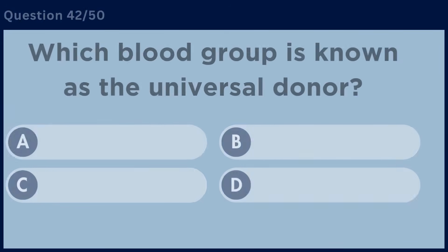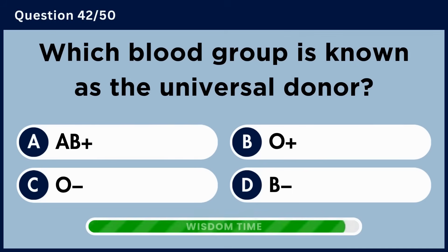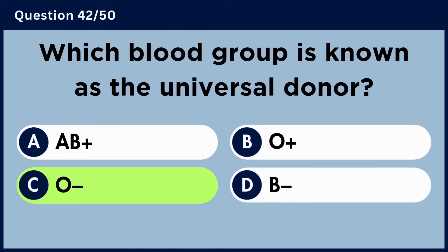Which blood group is known as the universal donor? Answer C: O negative.